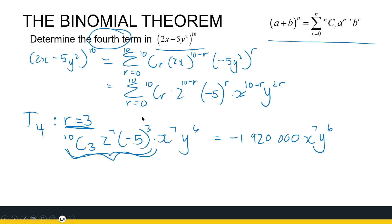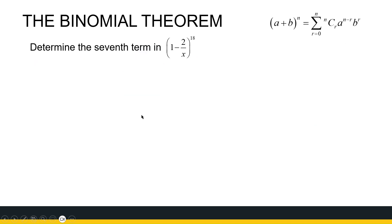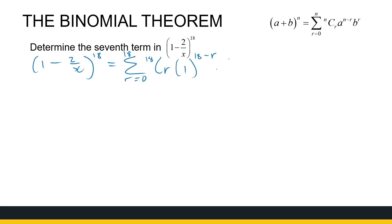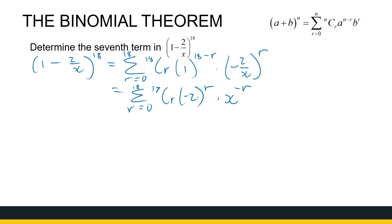Let's look at another type of question — asking for the seventh term of (1 − 2/x)^18. We definitely don't want to expand that with all 19 terms. It is the sum when r goes from 0 to 18 of 18Cr times 1^(18−r) times (−2/x)^r. Tidying up: 1 to any power is just 1, so we focus on (−2)^r times x^(−r), since it's −2 divided by x. For term 7, r = 6.